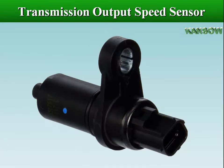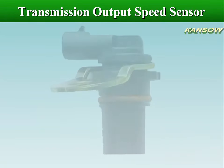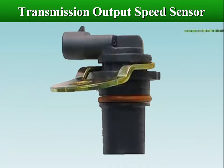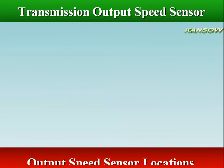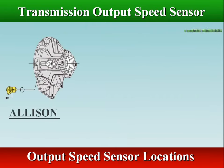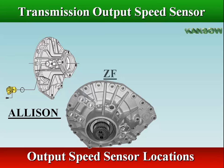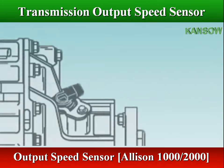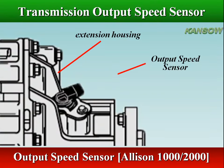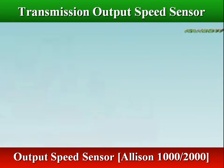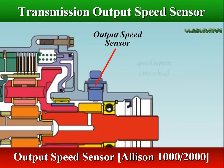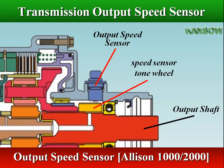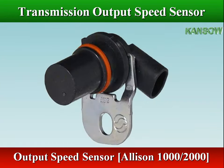The output speed sensor measures the rotational speed of the output shaft, and the TCM uses this speed to determine when to change gears. In Allison 1000-2000 series, the output speed sensor is externally mounted in the extension housing and directed at the teeth of a tone wheel splined to and rotating with the output shaft.